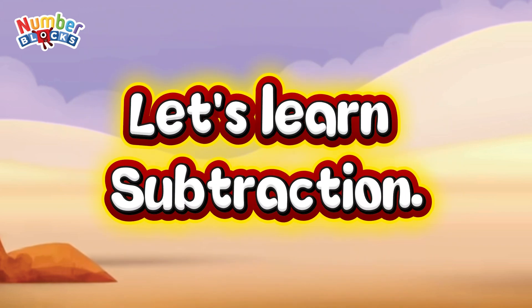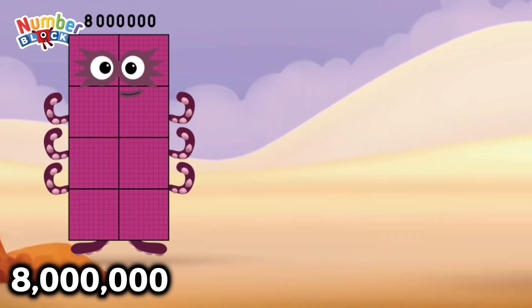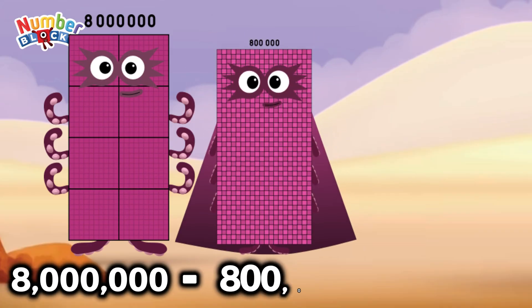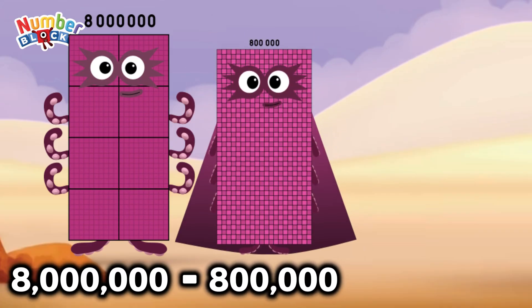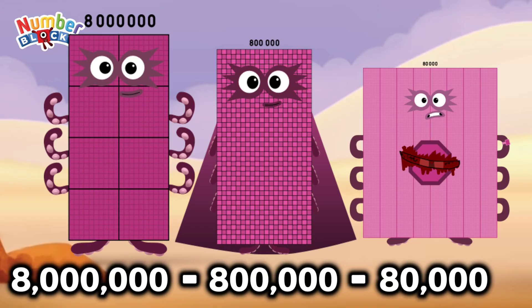Let's learn subtraction. 8,000,000 minus 800,000 minus 80,000 is equals 7,120,000.